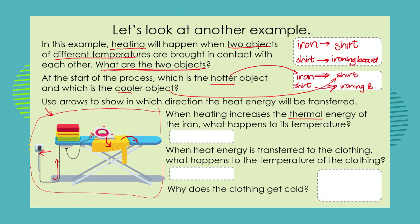When heating increases the thermal energy of the iron, what happens to its temperature? If we used a thermometer to measure the temperature of the iron at the beginning of the heating process and while it is getting hot, the temperature is going to increase. When heat energy is transferred to the clothing, the temperature of the clothing is also going to increase.